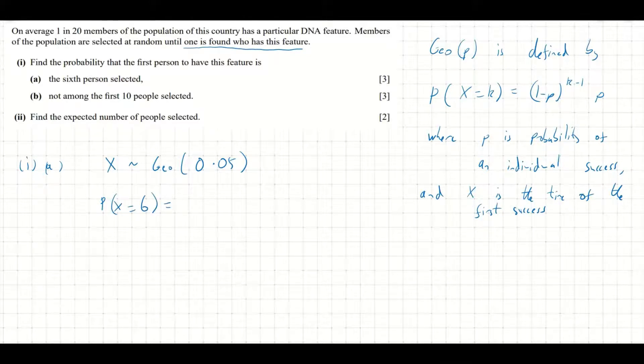P(X=6). We're just going to use the formula: 1 minus p to the 6 minus 1 times p. That's this formula up here. But p is 0.05, so this is 0.95 to the 5 times 0.05 equals 0.0387. So that's the probability that the first success is the sixth person.